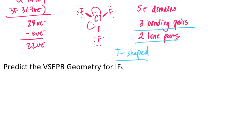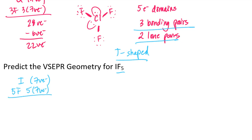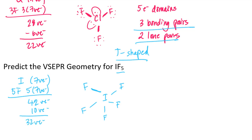Now what about iodine pentafluoride? Iodine has seven valence electrons. There are five fluorines in this molecule, and each fluorine also has seven valence electrons. Seven times five is 35, plus seven gives us 42 valence electrons total. I'll go ahead and assemble the structure, and so far I've used 10 valence electrons by adding five single bonds, so I need to add 32 more valence electrons.